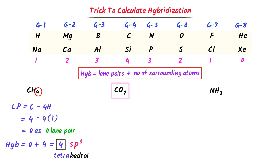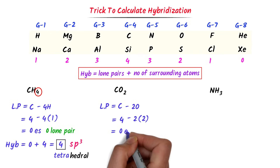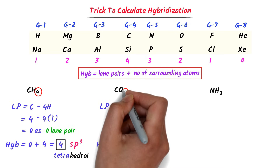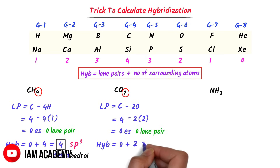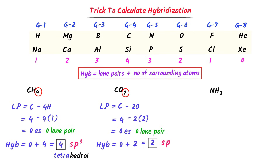In case of carbon dioxide, the central atom is carbon with 2 oxygen atoms. The group number of carbon is 4, minus 2 times valency of oxygen (2) = 0 lone pairs. Hybridization = 0 + 2 = 2 hybrid orbitals, meaning sp (1s and 1p). Thus the hybridization of carbon is sp, and we know that sp hybridization always gives a linear geometry.